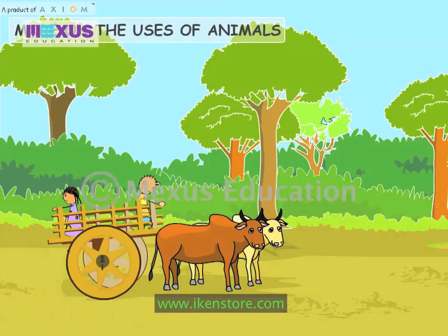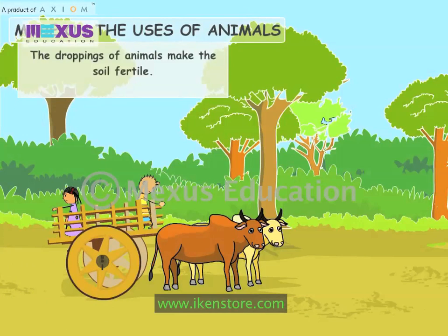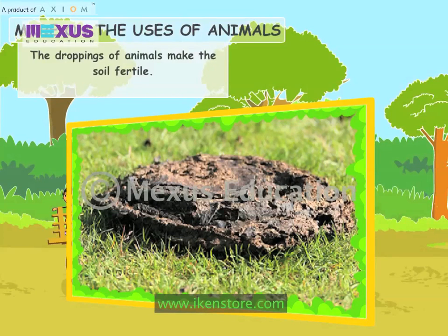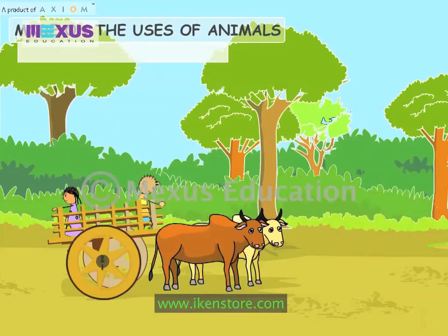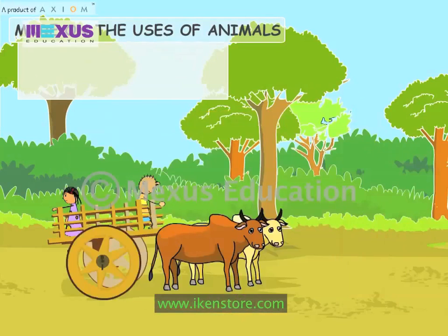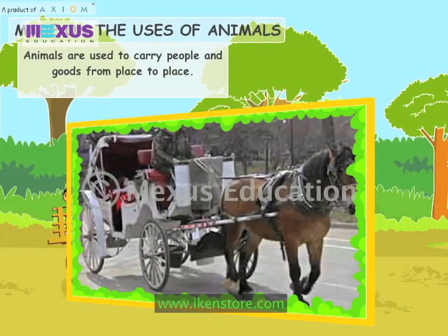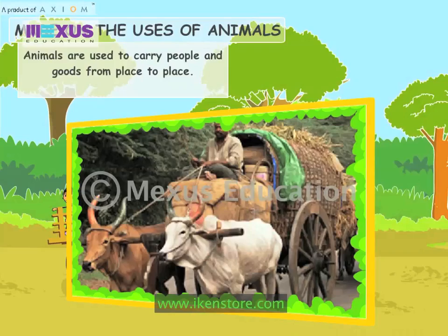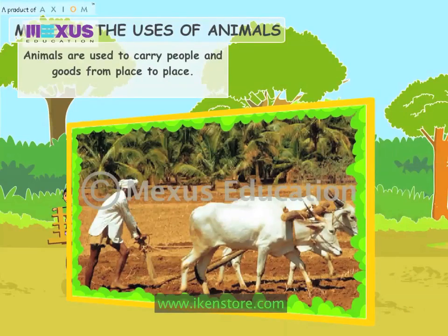The droppings of animals make the soil fertile. Gobar gas obtained from manure is used as fuel for cooking and to generate electricity. Animals are used to carry people and goods from place to place.